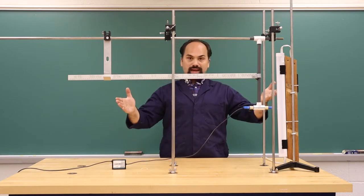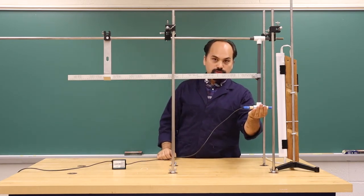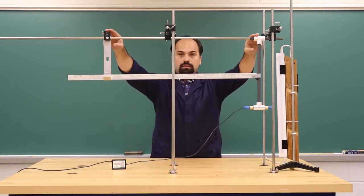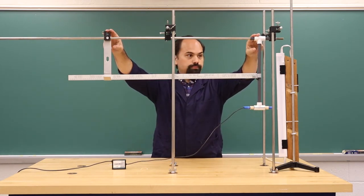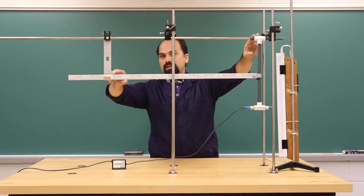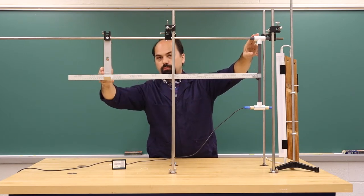In this apparatus, we have a light sensor that is hanging from this rail. It also has a meter stick with a fixed point of reference.